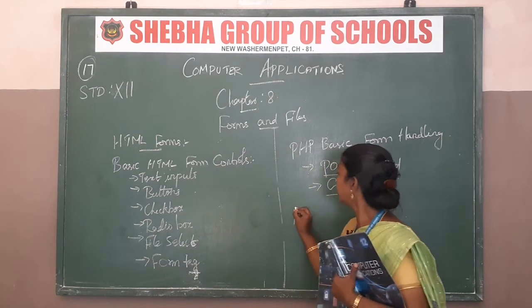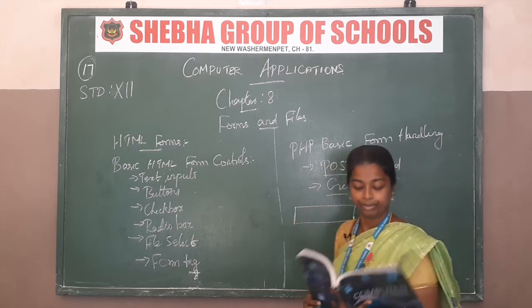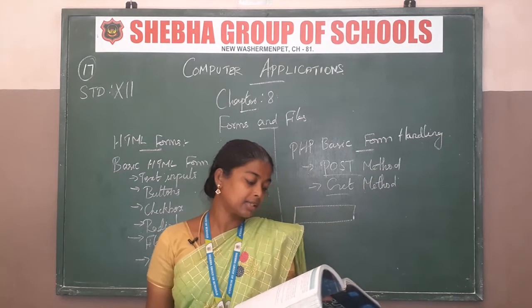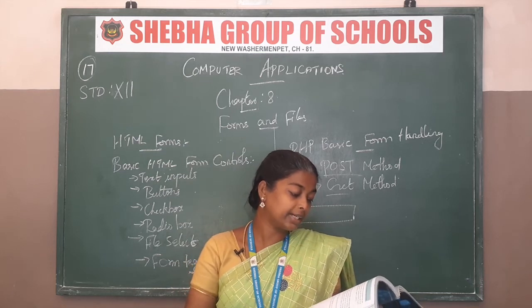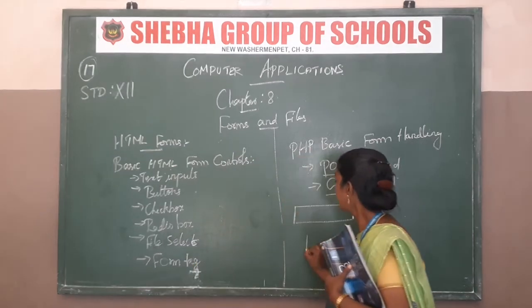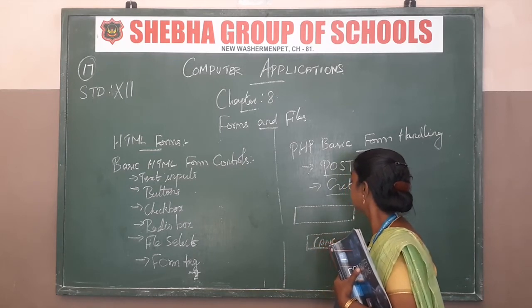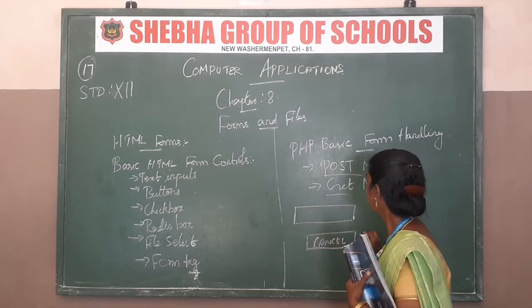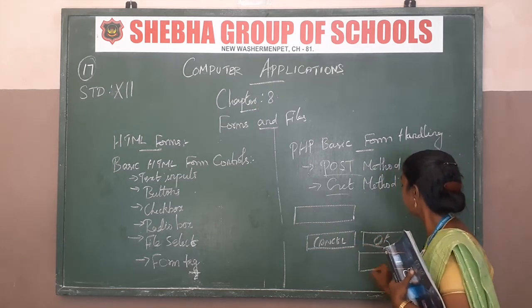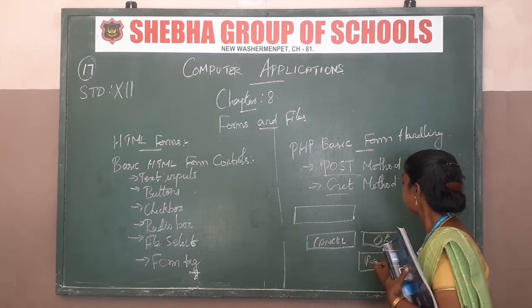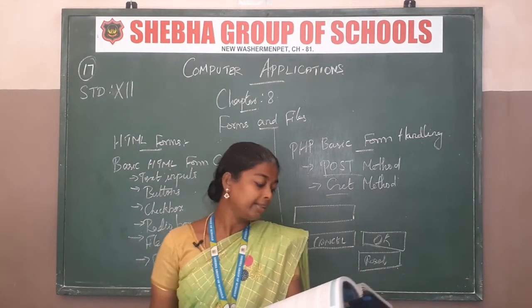This is the text box. Buttons may contain a submit button, reset button, and cancel button. This is the cancel button, OK button, and reset button — these are the command buttons.